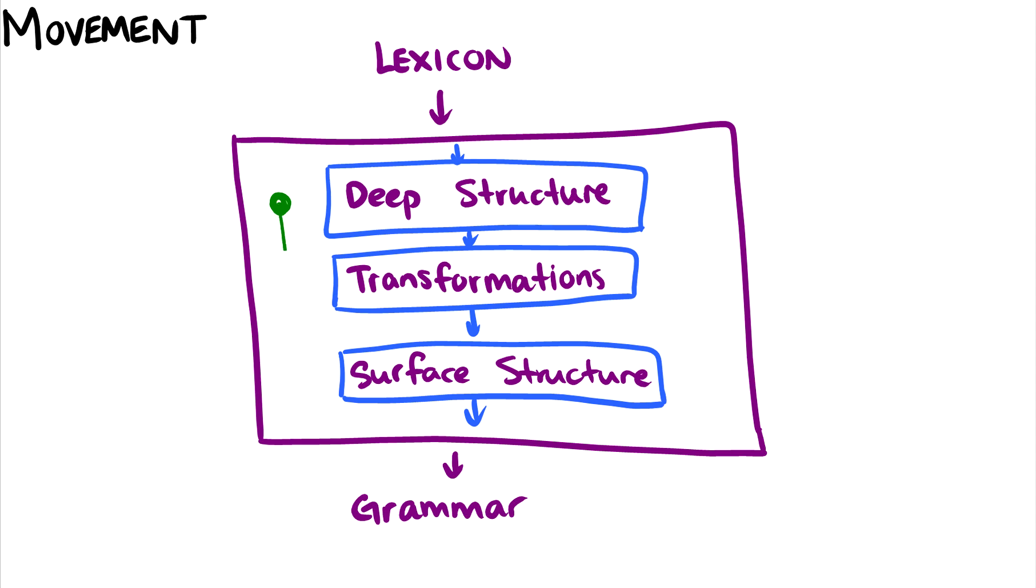and then it undergoes some transformation. So this is where movement occurs. Movement occurs in the transformations, and then the surface structure ends up becoming what we say. So think of it as having three different components: the deep structures in our mind, and then in our mind some more movement occurs, and then the surface structure is what comes out. And then all of our acceptable sentences make up our grammar.